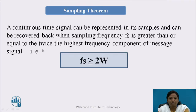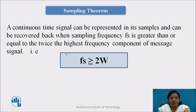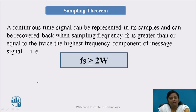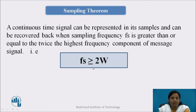To effectively represent the original signal from a sampled signal, it is necessary to take a sufficient number of samples. The number of samples depends upon the sampling rate as well as the maximum frequency of the continuous time signal. This relation is given by the sampling theorem: the continuous time signal can be represented in its samples and recovered when the sampling frequency fs is greater than or equal to twice the highest frequency component of the message signal, that is fs ≥ 2W, where W is the maximum frequency of the continuous time signal.